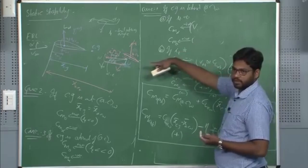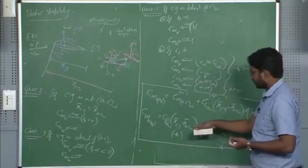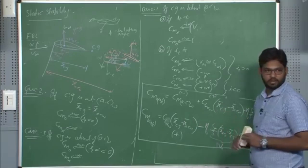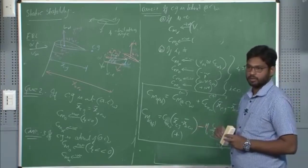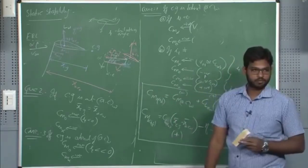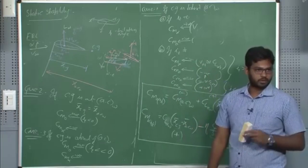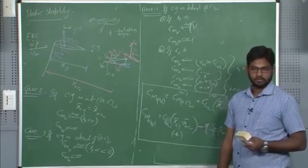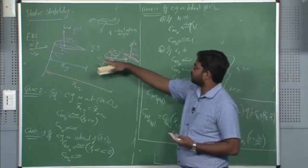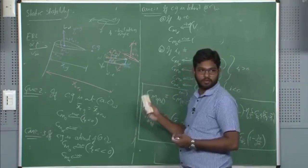Now, will there be any such neutral point — a neutrally stable location — for a wing-and-tail combination? If so, what is it? Even for a wing-and-tail combination there should be some such point. For wing alone, the neutral point is where CG equals the aerodynamic center of the wing, making the aircraft neutrally stable. If CG is moved ahead, the aircraft is stable but also tends to dive down, not performing the intended task.